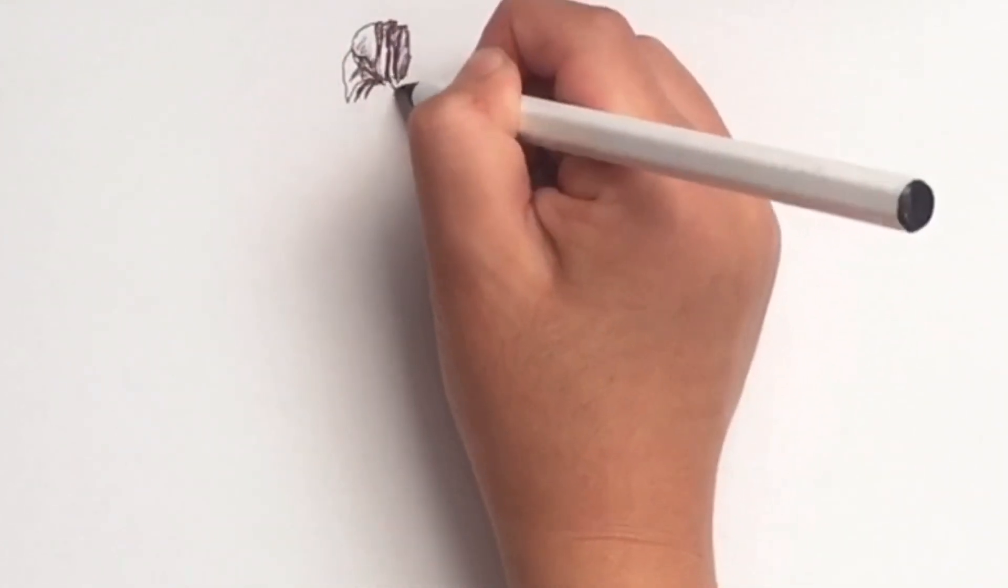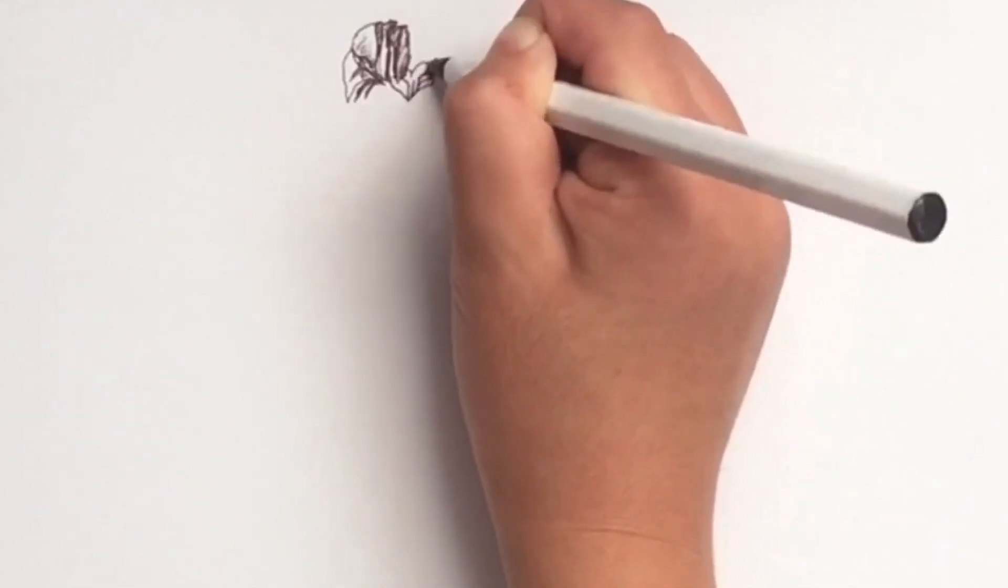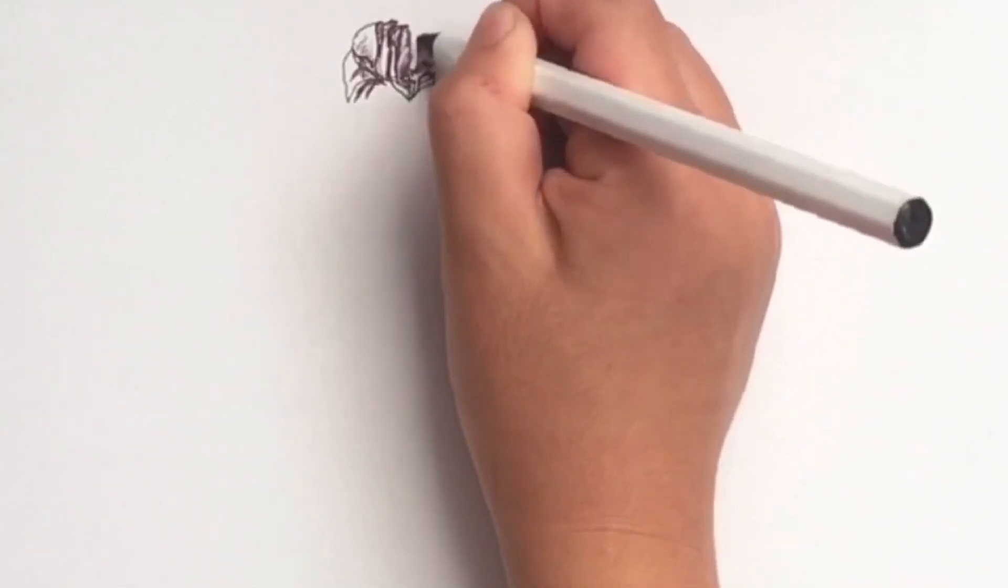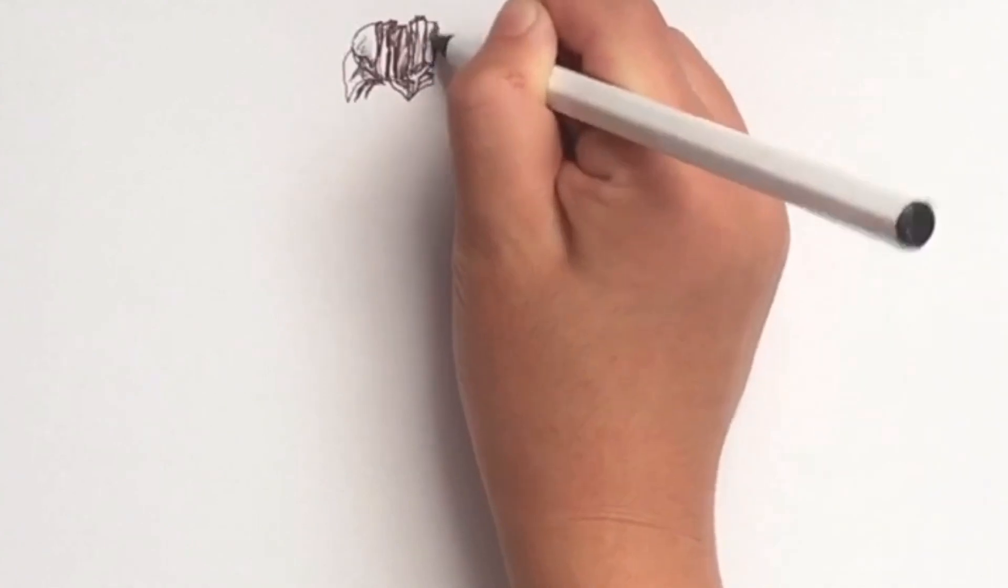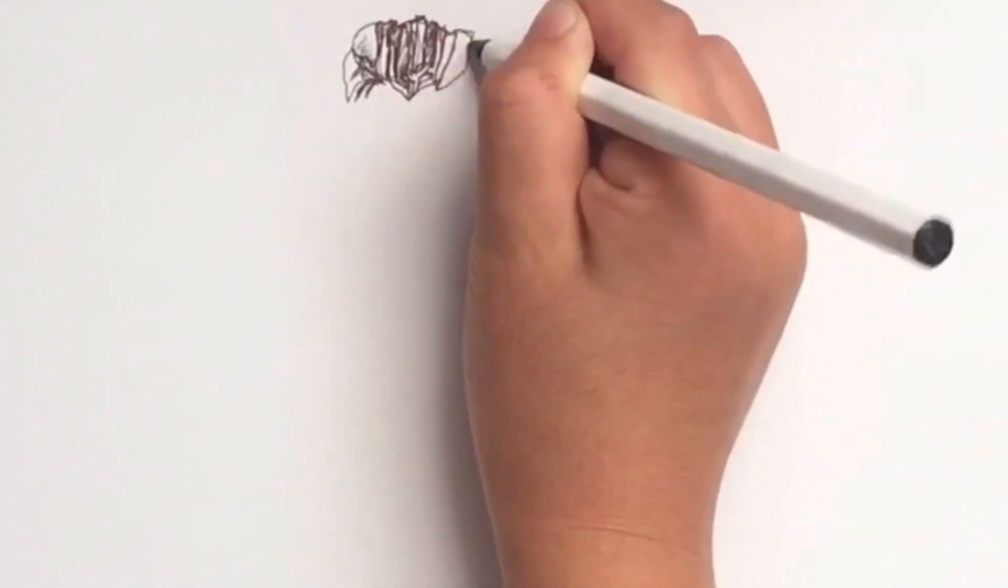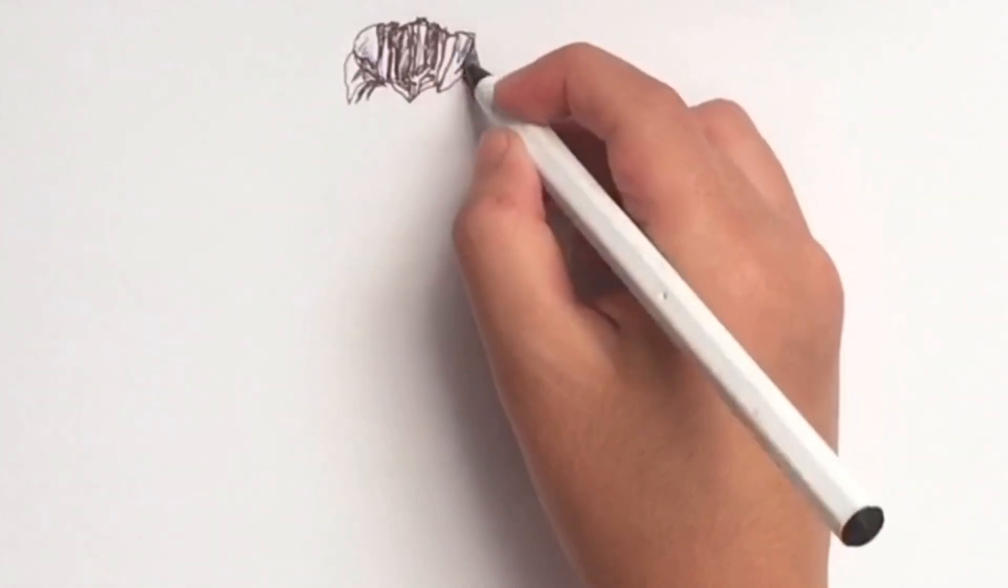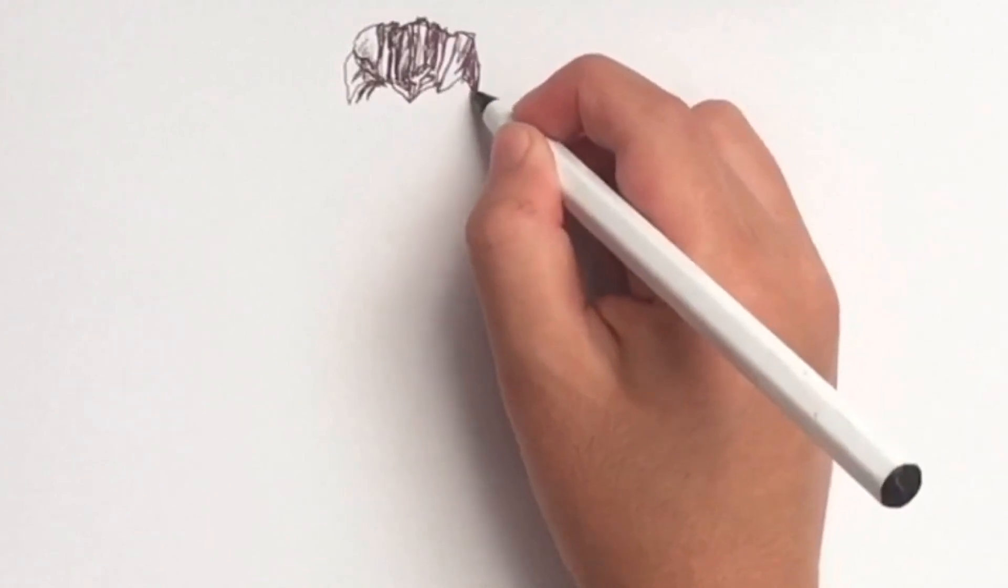Okay, so now we're going to be drawing Thanos in a single line. Yeah, the rules are use pen and don't let the pen leave the paper. Let's go!